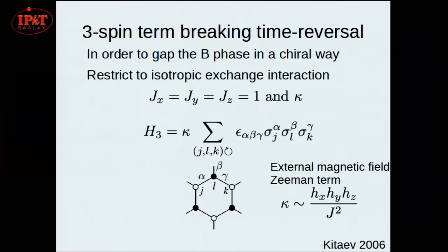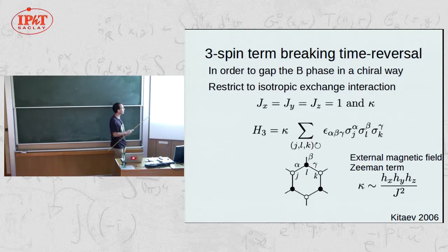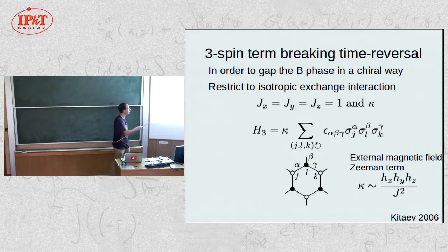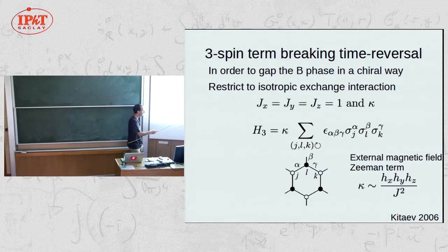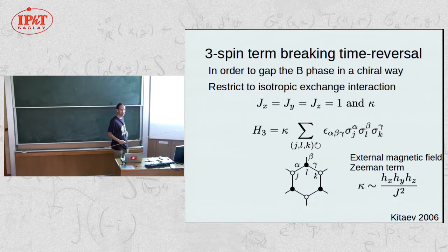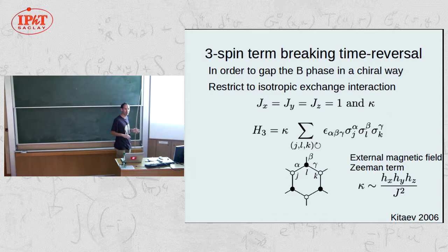Now switching on a three-spin term: at the isotropic point (gapless phase), I introduce a term originally derived by Kitaev perturbatively from coupling real spins to a real magnetic field at third-order perturbation theory in h_x, h_y, h_z. However, here we treat this term as present in the Hamiltonian with coefficient κ, which we do not assume to be small. This term has an odd number of spin operators, so applying time reversal gives a minus sign — it breaks time reversal symmetry.